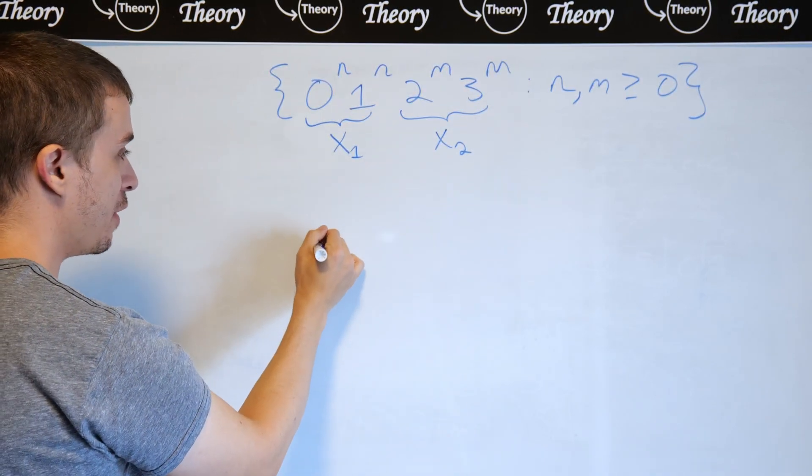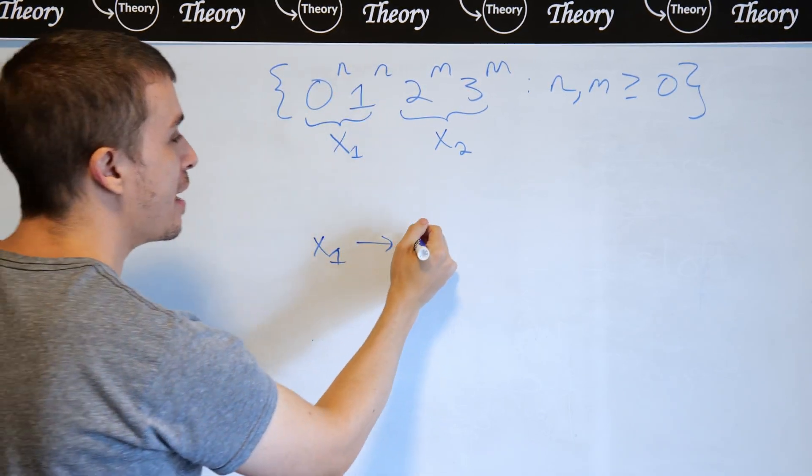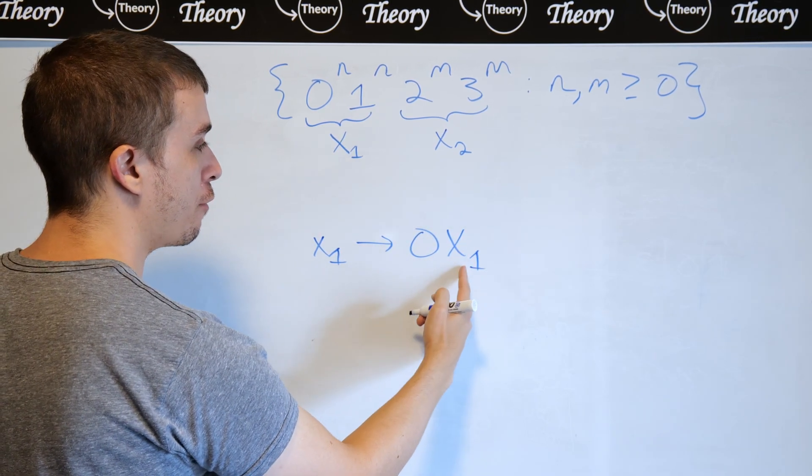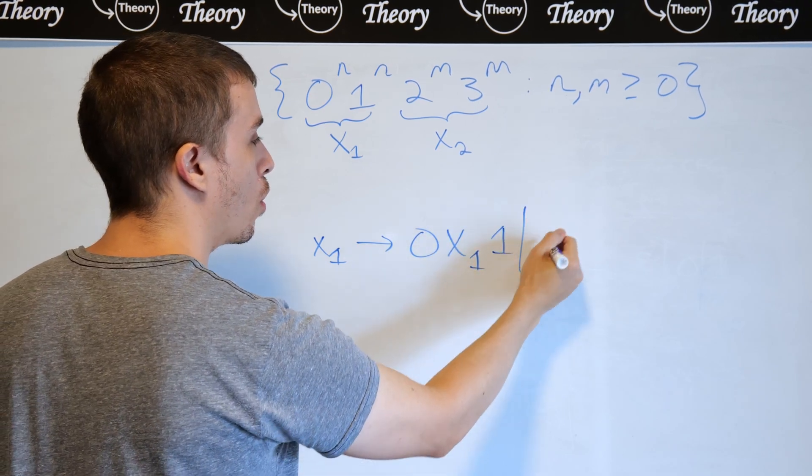So let's figure out what x1 makes. x1 has to make 0^n 1^n, and that should be fairly easy to do at this point. So 0 on the front, then recursively go in, and then a 1 on the end, or empty.